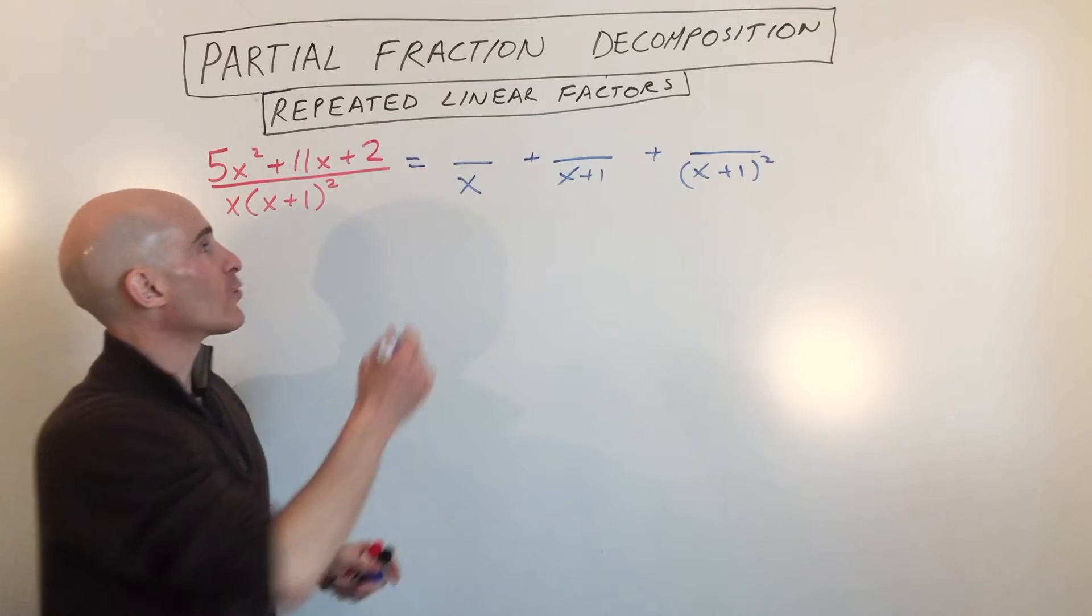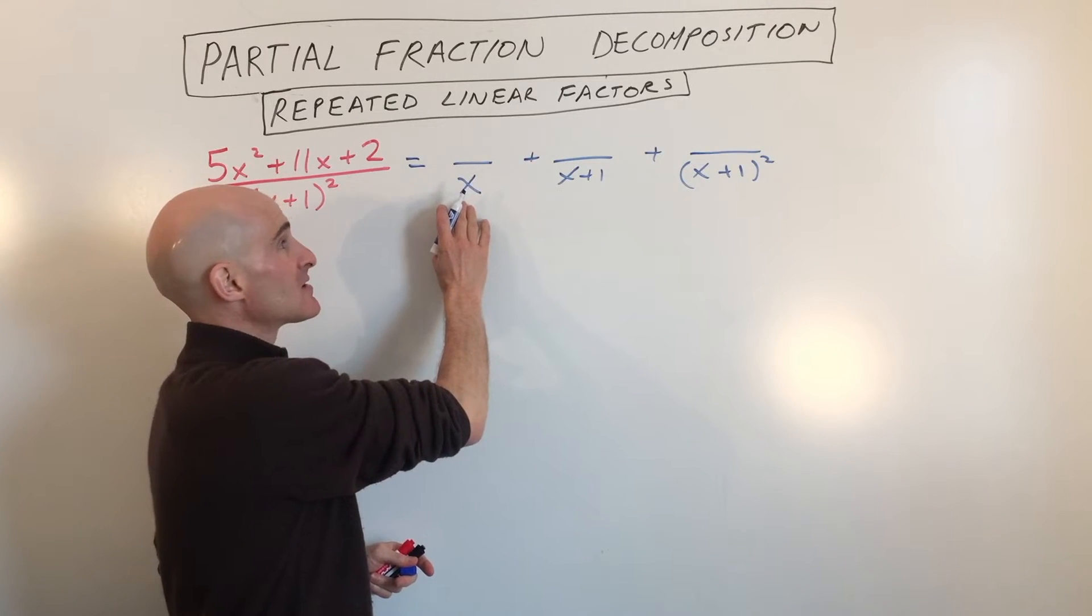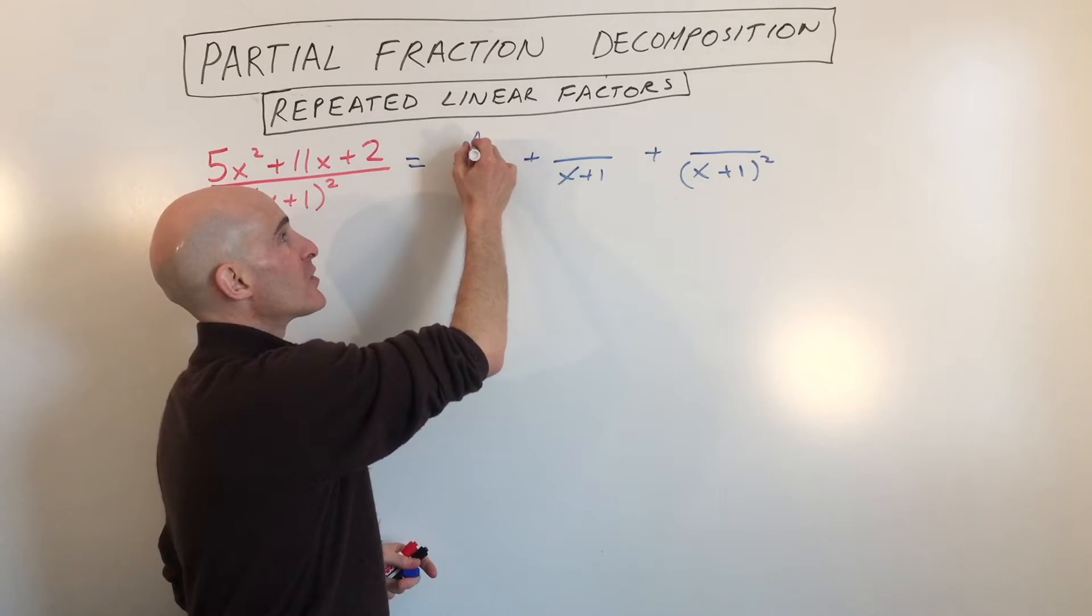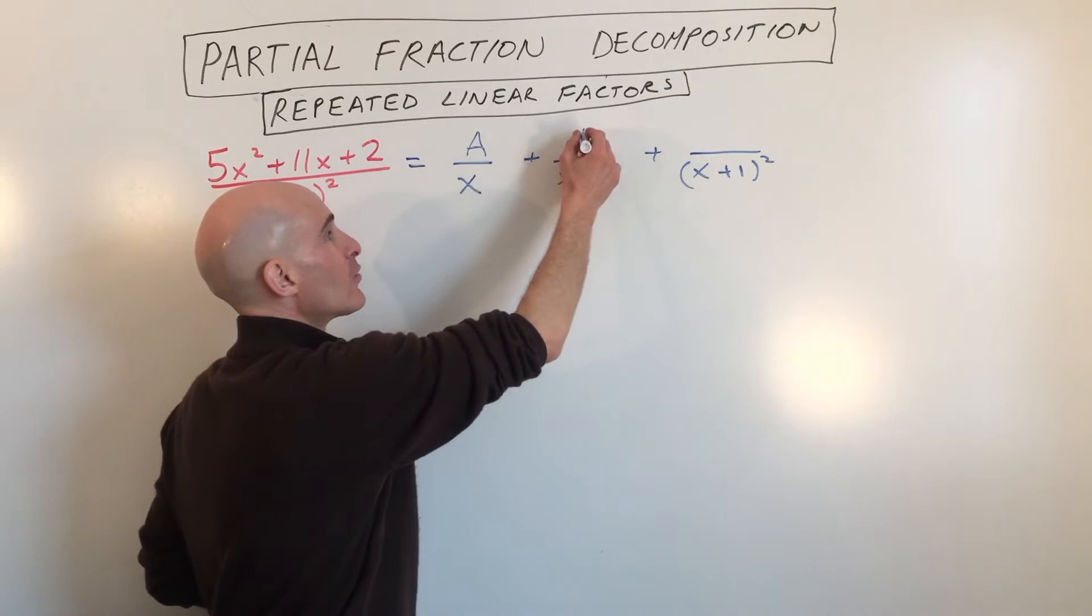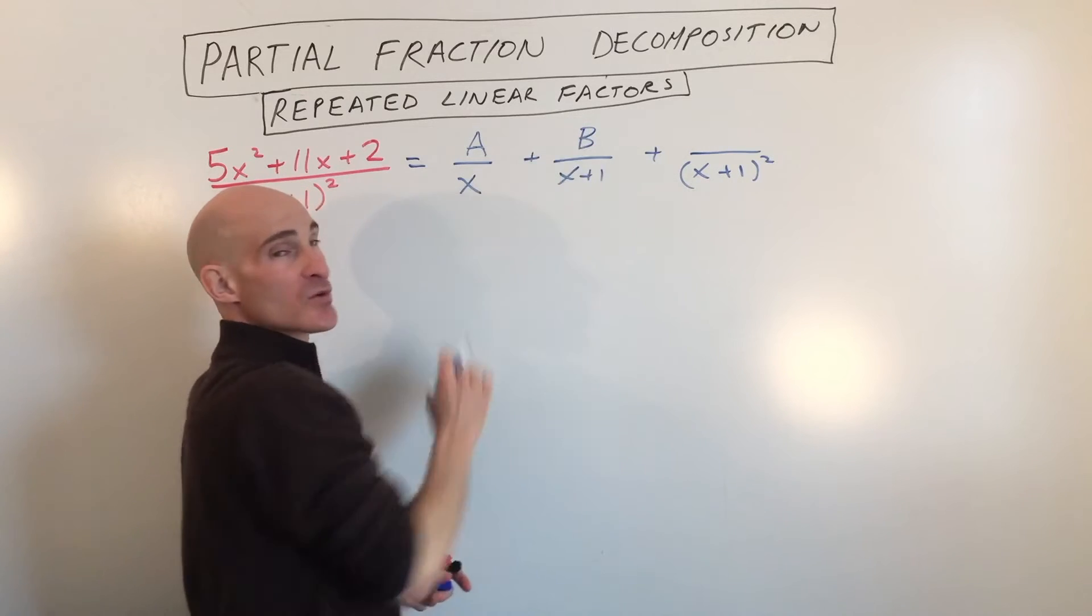Now, the next thing is the numerator. Well, we know this is to the first degree. It's linear. This has to be lower by one degree. That's going to be a constant. We're going to call that A. This is also linear. We want this to be one degree lower. So we're going to call that B.